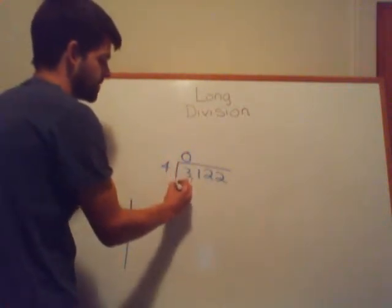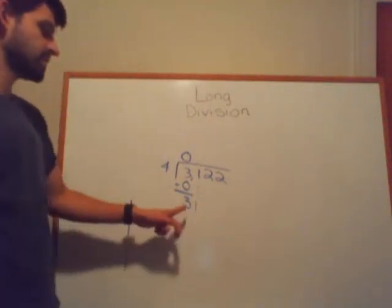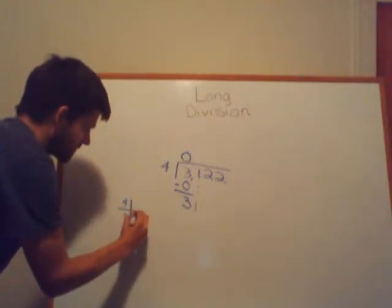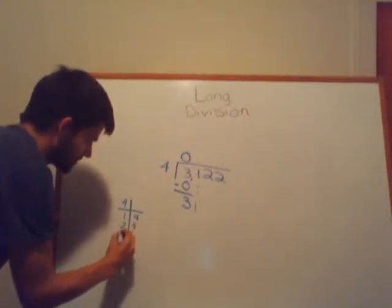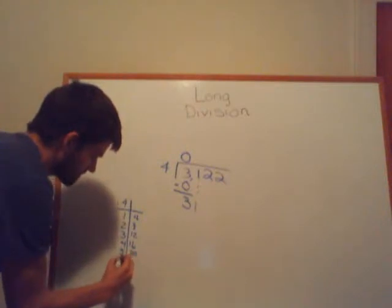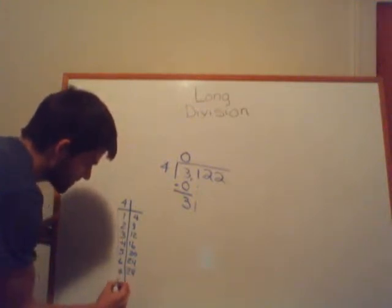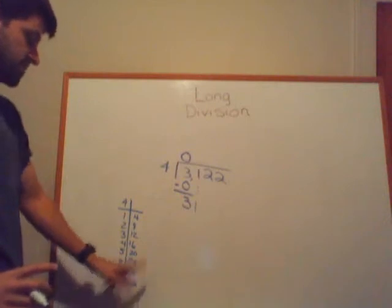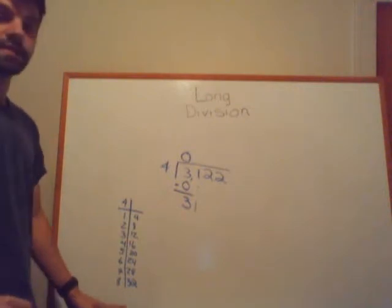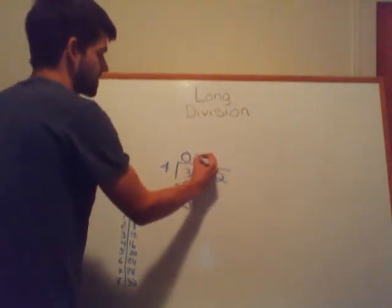Bring down the 1 and now figure out how many times 4 goes into 31 without going over. Make your table: 4×1=4, 4×2=8, 4×3=12, 4×4=16, 4×5=20, 4×6=24, 4×7=28, 4×8=32. I can stop there because 32 is greater than 31, so 4 can't go into 31 eight times. But it can go in 7 times because 4×7=28, and 28 is less than 31.